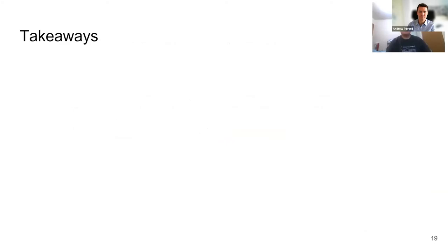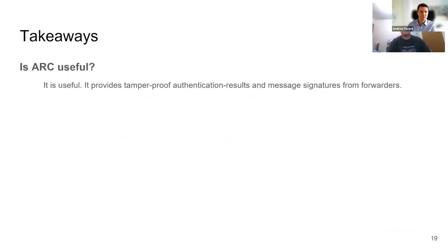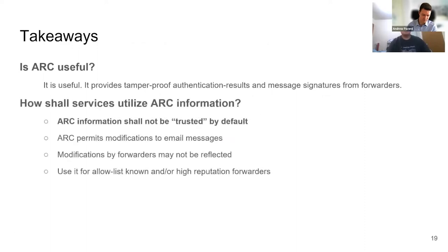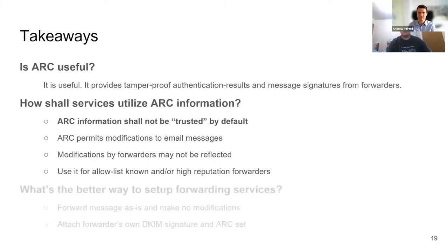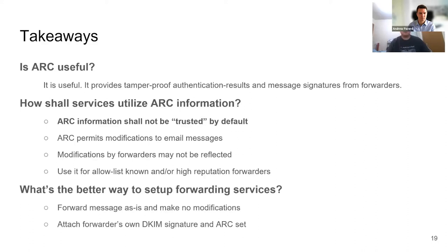So after all these experiments and measurements, do we think ARC is useful? The answer is yes. It provides a way for a receiver to check tamper-proof forwarding records made by each forwarder on the path. However, this is only true when services interpret and utilize the additional information in the right way. We should always remember that these records are made by forwarders, not the original sender. In addition, it is permitted to modify the message between forwarding hops. So it's probably okay to use ARC for trusting known forwarders, but it should never be trusted by default. As for setting up forwarding services in general, our advice is that forwarders should always try not to make modifications to the message including existing headers, and it is always recommended to sign your own additional DKIM signature as well as seal an ARC set upon forwarding.